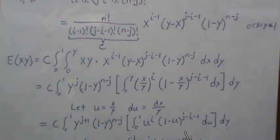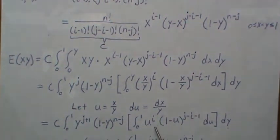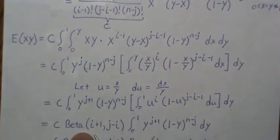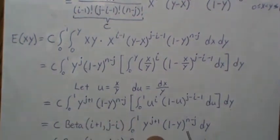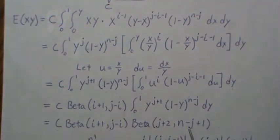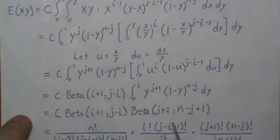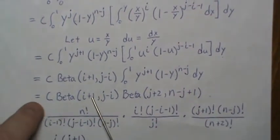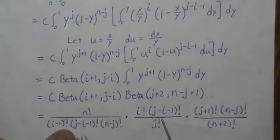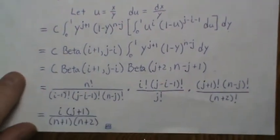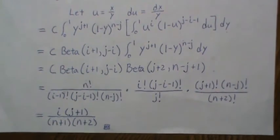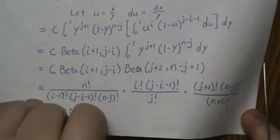Now this is a beta distribution without the constants in front. So when we integrate this, it becomes the reciprocal of those constants, which is this, and then we have this, and this is another beta distribution. So it's this. Now i and j are integers, so then these beta functions can be represented in factorial form. So this is C, this is that beta, this is the beta, and then when we simplify that, we get this function here. So this is the product moment of joint order statistics, or the ith and jth order statistics specifically.